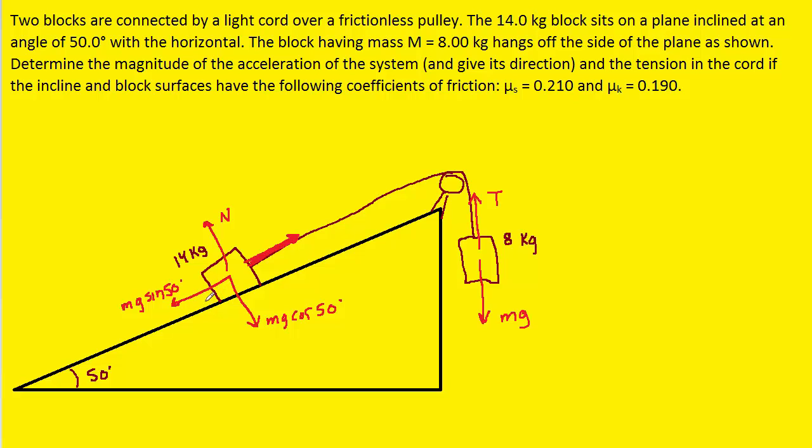Now, to decide which direction the frictional force is acting, we need to figure out which direction this box is traveling. Generally, if the box on the ramp is more massive than the hanging box, then that means it's going to slide down the ramp. But what you really have to do to confirm that is to take the mass of the box that's on the ramp,